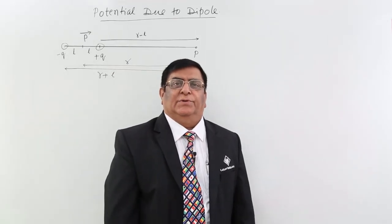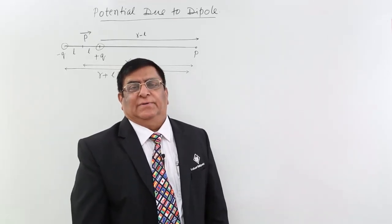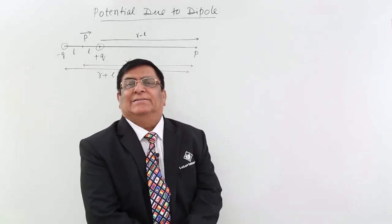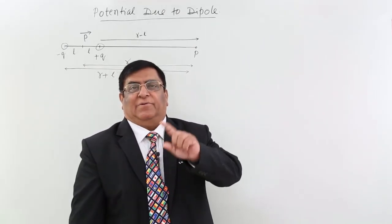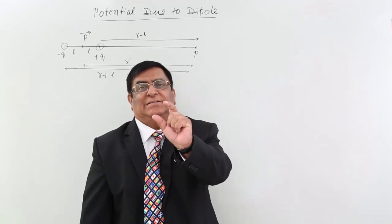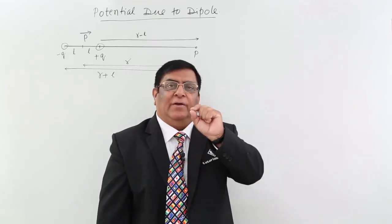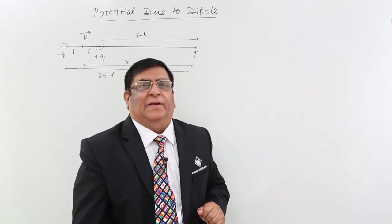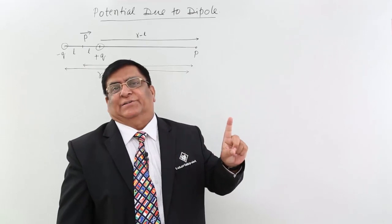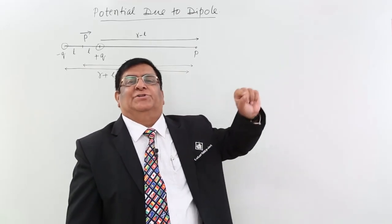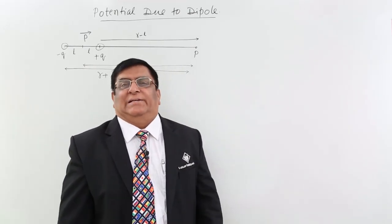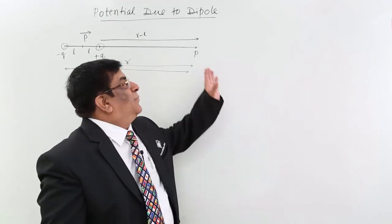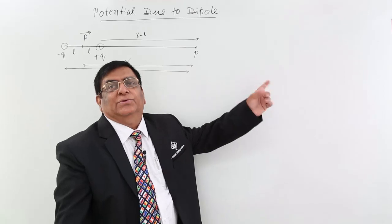Now we will study potential due to a different type of distribution, and that distribution is dipole. A negative and positive charge kept at a finite distance makes a dipole, and we have seen that a dipole is able to make an electric field. If a dipole is making an electric field, then there will be potential at every point in that electric field, and now we will calculate electric potential due to a dipole.